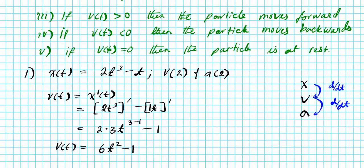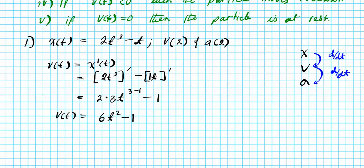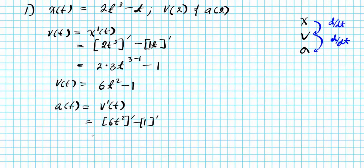While we're at it, let's find the acceleration function. a(t) is the derivative of the velocity function. We differentiate 6t² − 1 term by term: applying the power rule gives 6·2·t^(2−1), and the derivative of a constant is 0. Simplifying, we get a(t) = 12t.